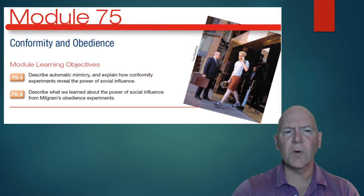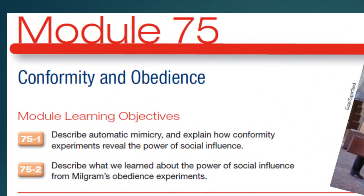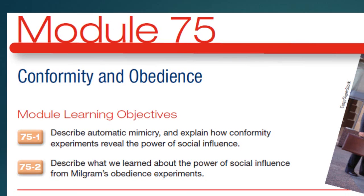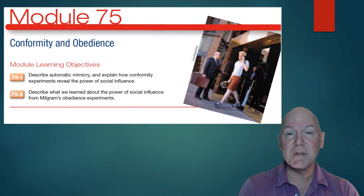Conformity and obedience is the next section. Mimicry — how do we copy one another, and when do we conform? Everyone prides themselves on being individuals, but if you look at the clothes people wear, it's definitely socially dictated. Everybody wears very similar kinds of clothes, and even those who wear different types are usually conforming to a group they belong to.